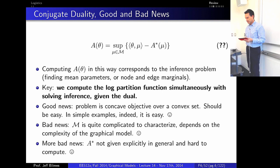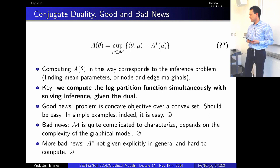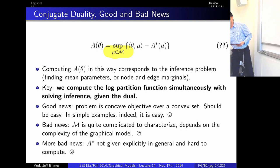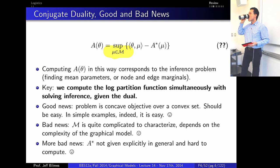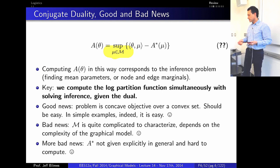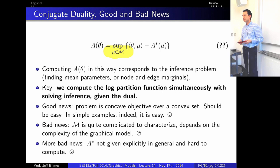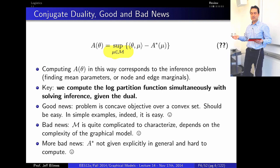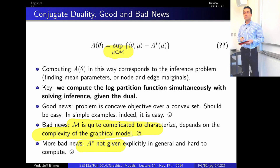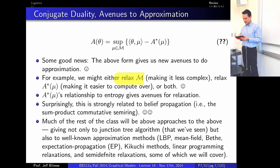By computing the log partition function we're solving the inference problem. The dual is always convex because it's a supremum of affine functions. However, it's not easy because M is complicated to characterize and we don't have a closed-form expression for A-star. If we approximate these things — relaxing M or relaxing A-star — maybe we can make progress.